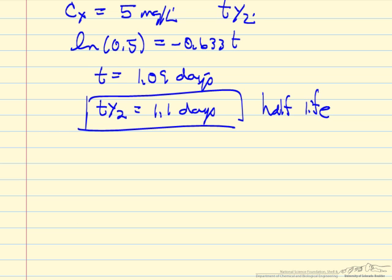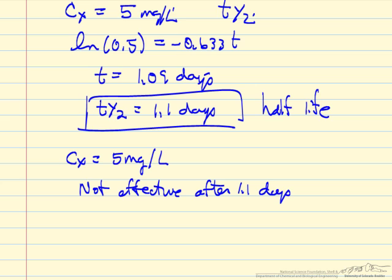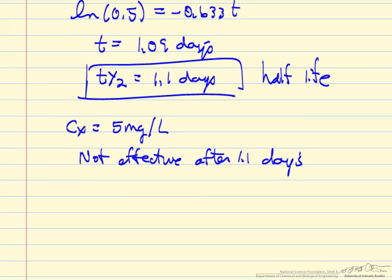The problem asks when the dose will no longer be effective, when concentration is less than 5 mg/L. For this first injection, that corresponds to the half-life, so it's not effective after 1.1 days.